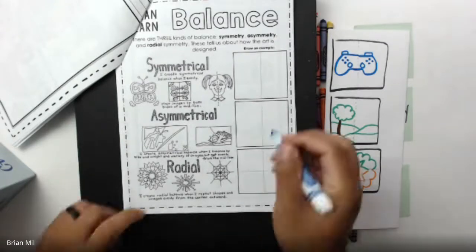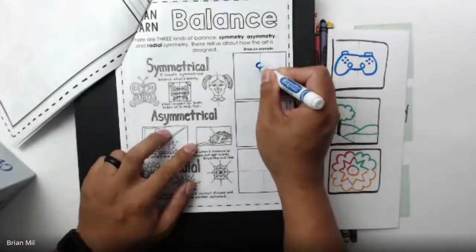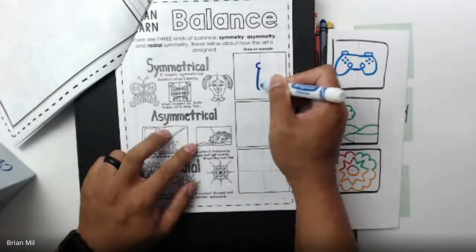You could do a bug, you could do like maybe a symmetrical tree, a house on this little box. So I'm going to do my own design - maybe I'll do a bug. I'll do half a bug right here, the body, I'll do the antenna.